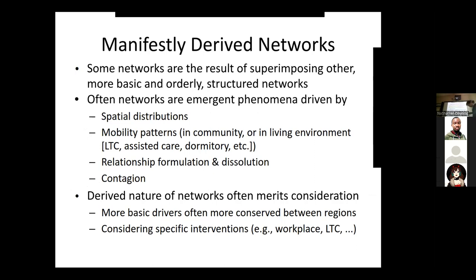We're almost done with this overview of issues with networks. Before we start diving into particular networks and network structures as mathematically and statistically characterized, here's one more thing: some networks are more primal than others, and some are what I would call derived or composite networks — a result of more simple things. Some networks are the results of superimposing simpler networks in day-to-day life.